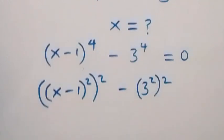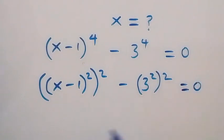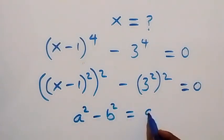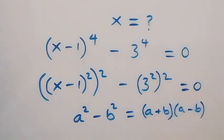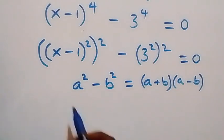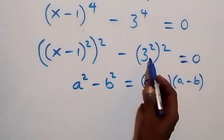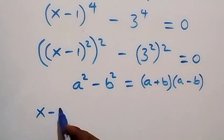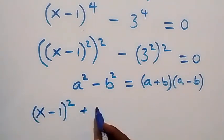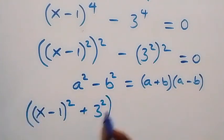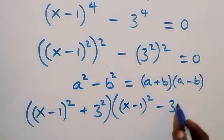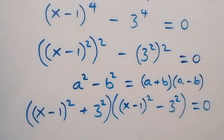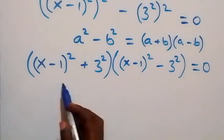This equals zero. We compare this with the perfect square difference: a squared minus b squared, which can be written as a plus b multiplied by a minus b. From what we have here, a is serving as x minus 1 squared and b is serving as 3 squared. So this can be written as x minus 1 squared plus 3 squared, then open bracket x minus 1 squared minus 3 squared, equals zero.